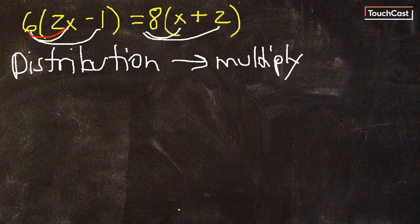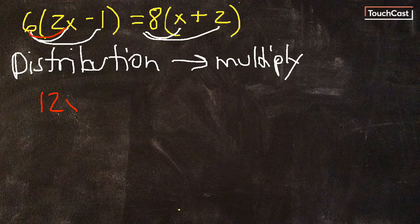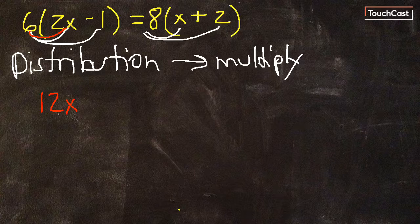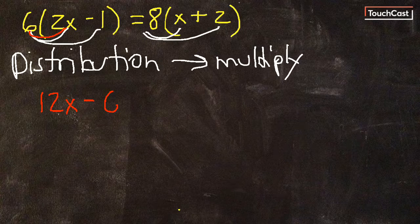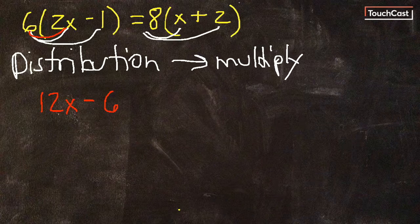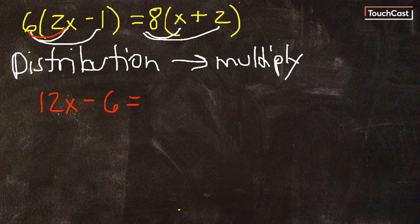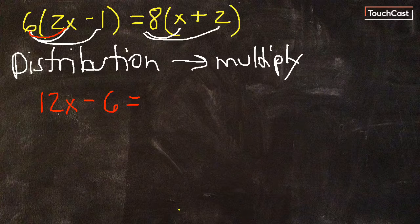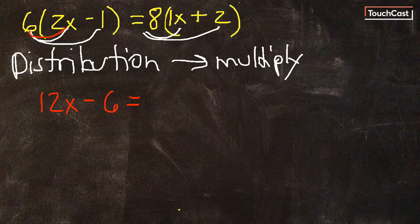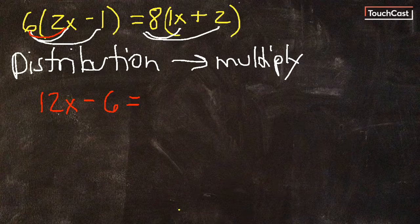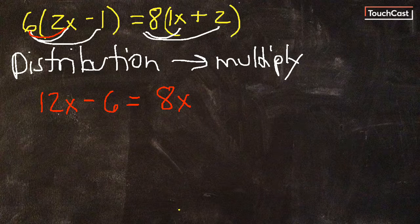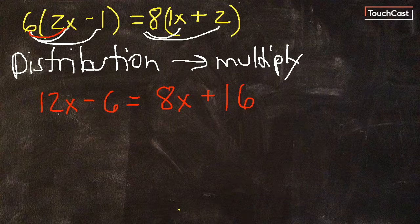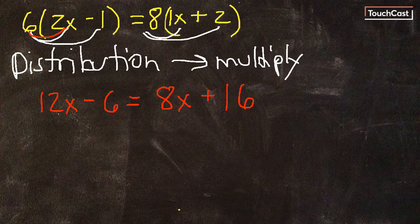6 times 2 is 12. Well don't forget that x. It still hangs out with the 12, but we're only dealing with 6 times 2. 6 times 1 is 6, and that subtraction symbol still comes down. It doesn't go away, it's still there. Equals, well 8 times x. Wait a second, there's no number to multiply it by. Remember that if there is no number in front of x, it's still a 1x. So 8 times 1 is 8, and the x still happens. And then 8 times 2 is 16.